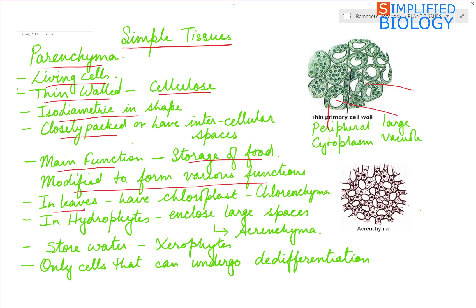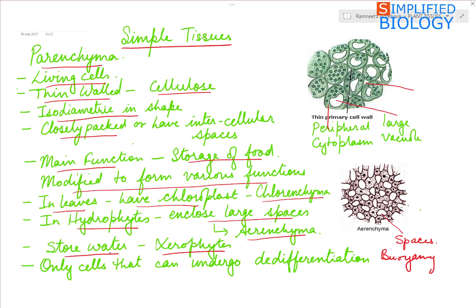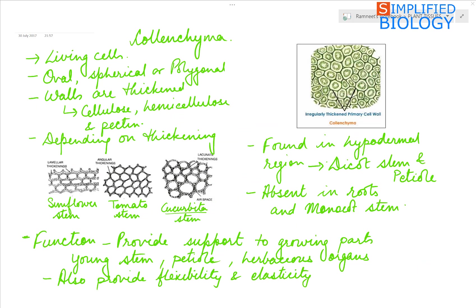In leaves, they have chloroplasts, hence are referred to as Chlorenchyma, which carry out photosynthesis. In hydrophytes, they enclose large spaces and are referred to as Aerenchyma, which provide buoyancy that helps in floating. In xerophytes, they store water. Parenchyma are the only cells in the plant body that can undergo de-differentiation, meaning they can regain the ability to divide.